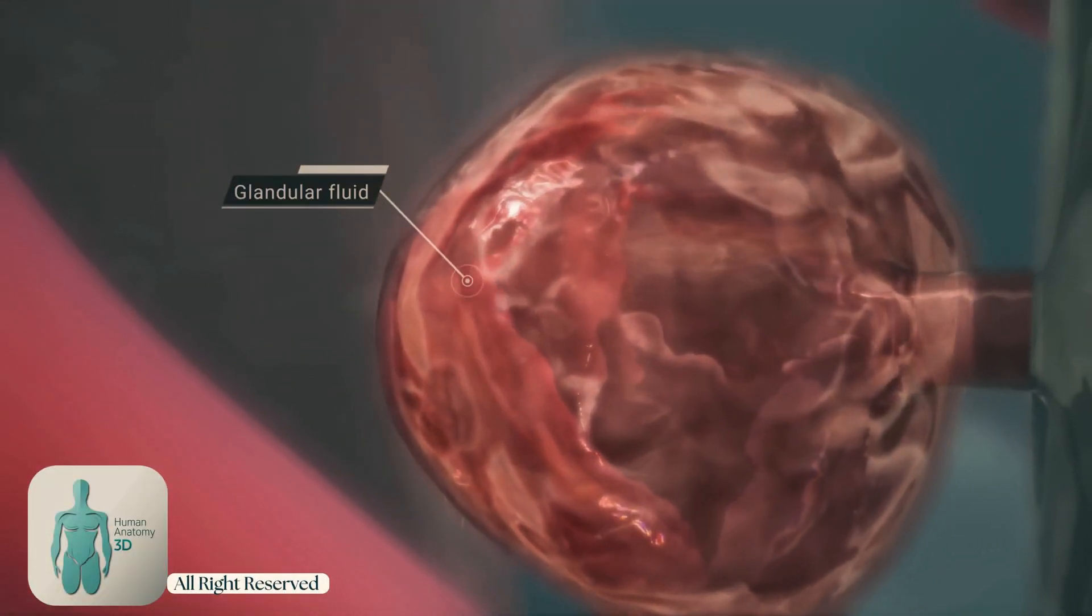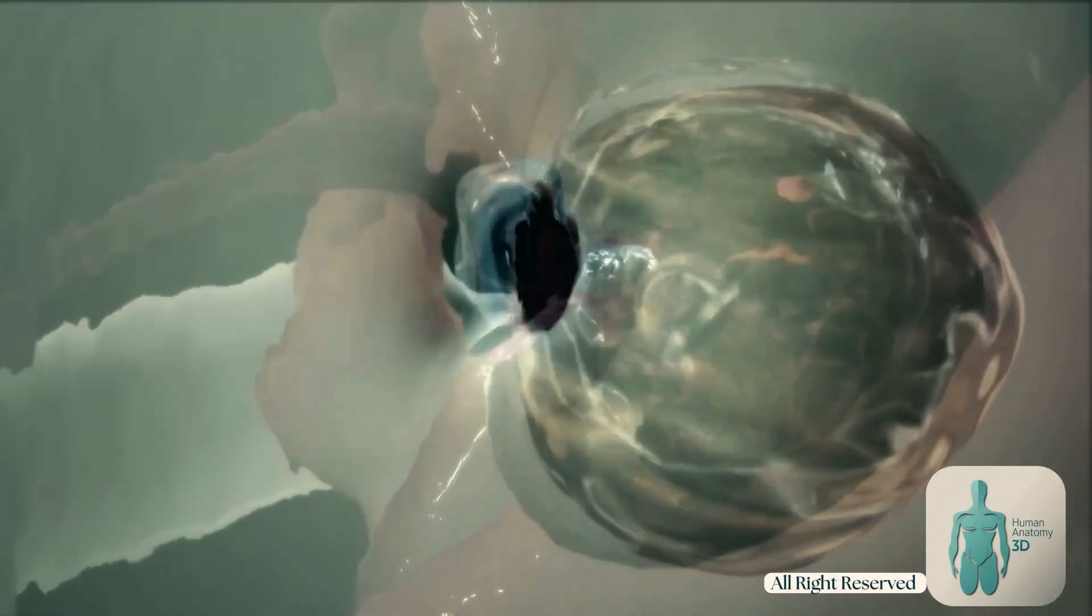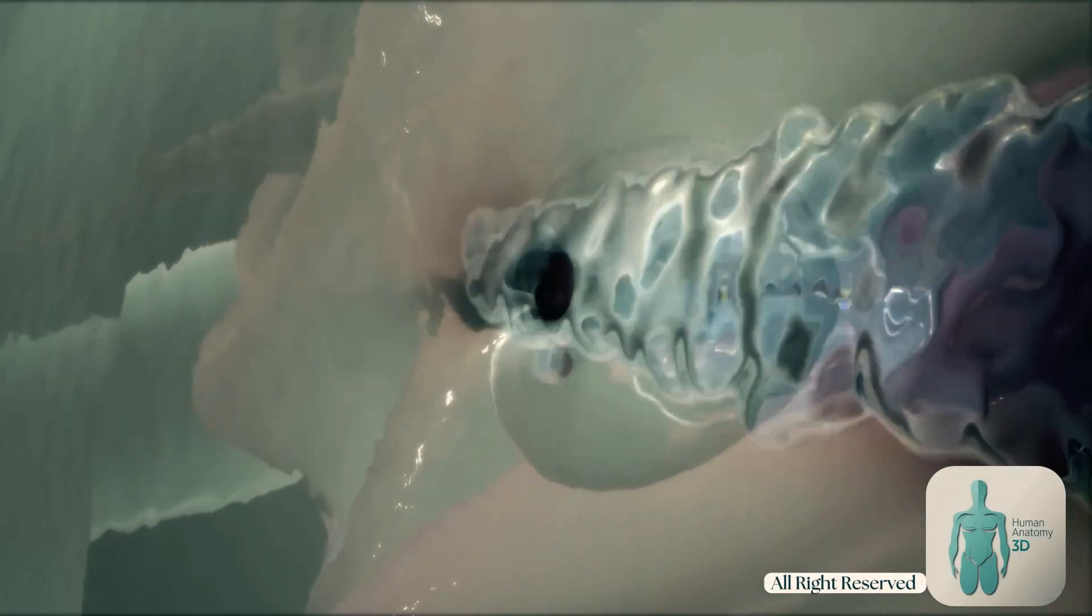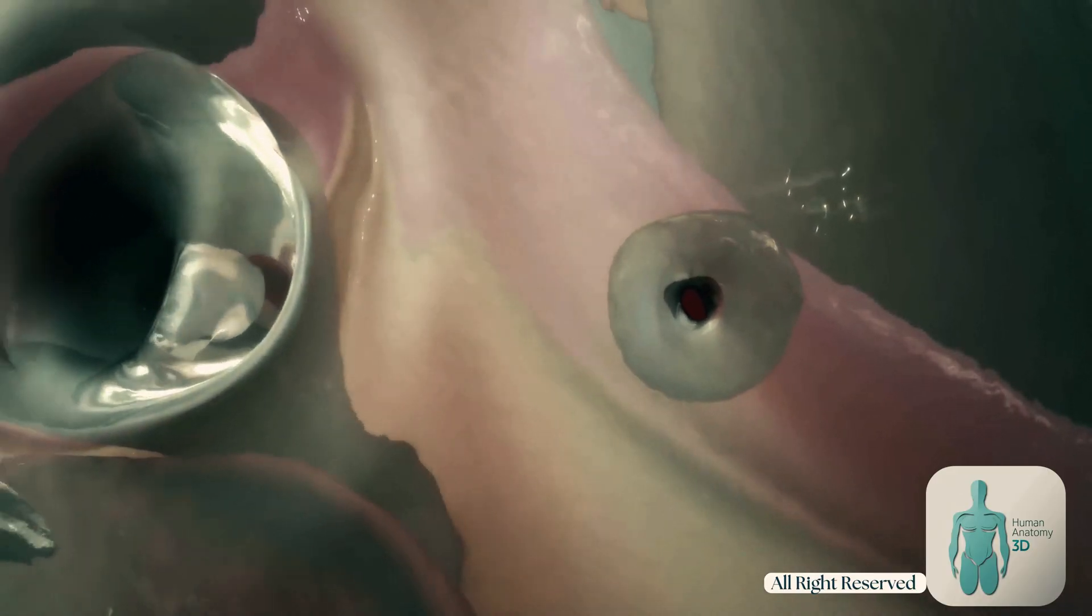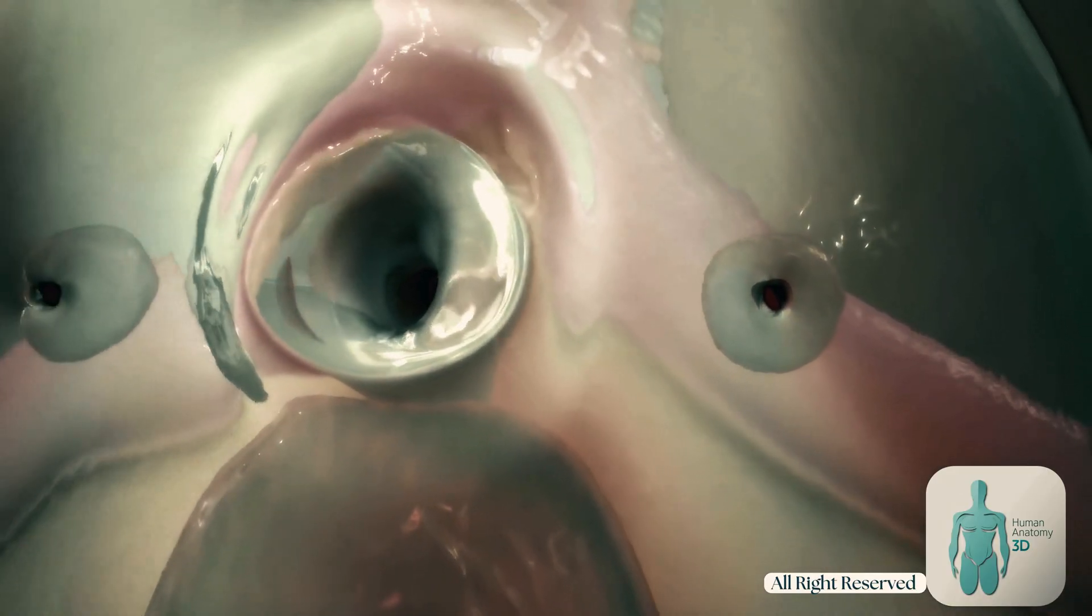Each Skene's gland is about the size of a pea and is made up of acini, which are small clusters of cells that produce the glandular fluid. The fluid is then drained through a single duct near the urethral opening.